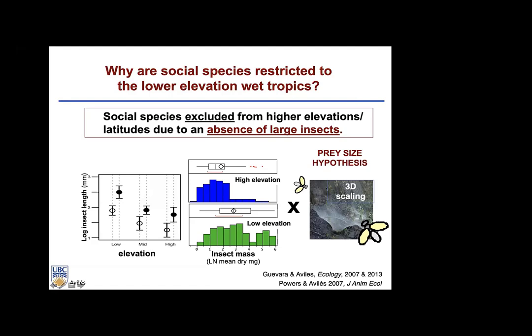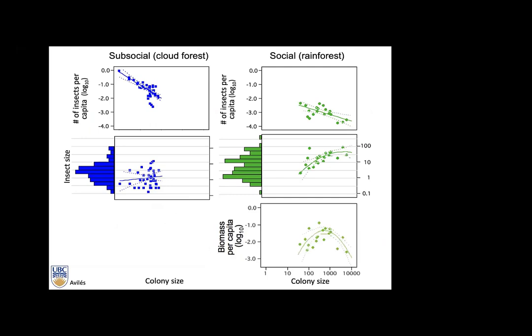The explanation for why insect size matters involves the three-dimensional scaling of webs: as 3D objects grow in size, surface area doesn't grow as fast as volume. The number of insects intercepted by a colony should be proportional to surface area, but resources needed are proportional to volume. Therefore, insects per capita should be a decreasing function of colony size — we see this for sub-social species at high-elevation cloud forests and for social species in lowland tropical rainforests.